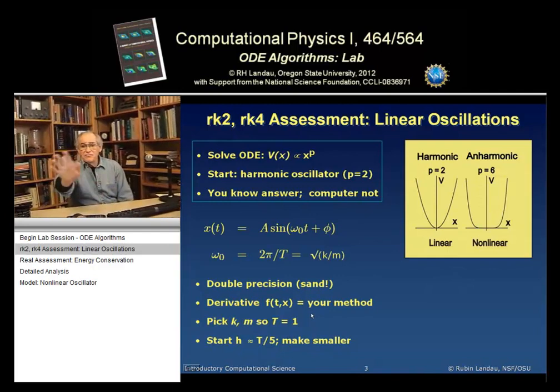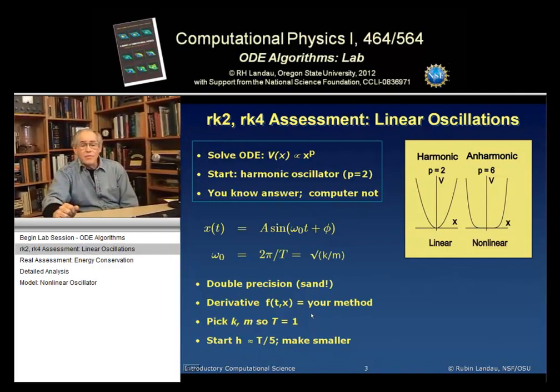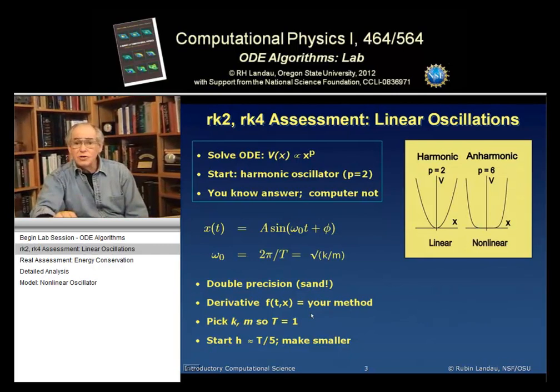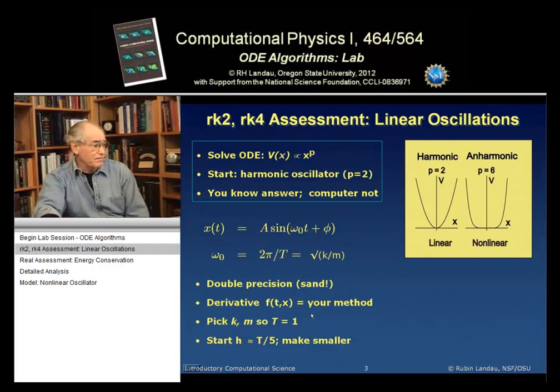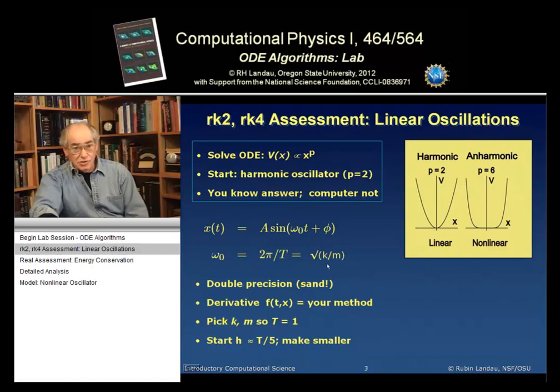The derivative function f, that's all you input, that's your method, that's what gets called by the algorithm. You don't have to change the algorithm to speak of. You should be smart. Choose values of k and m so that here in the equation for omega_0, so that you have simple constants to work with. I recommend choosing a k and an m so that the period T is 1. Then you know 100 periods means time of 100.